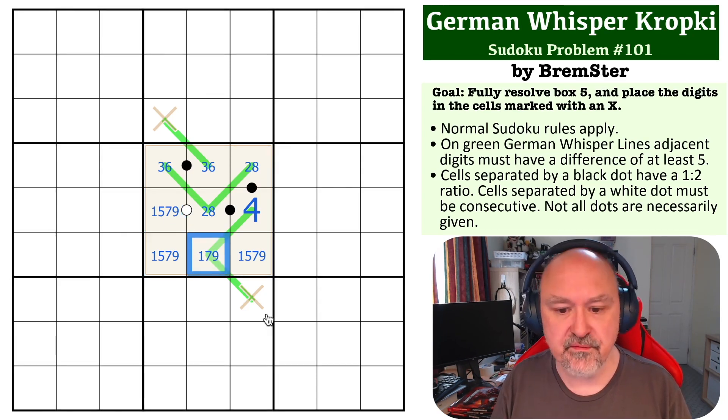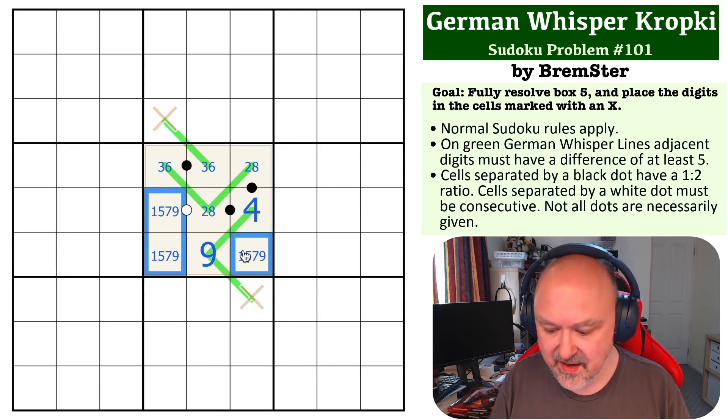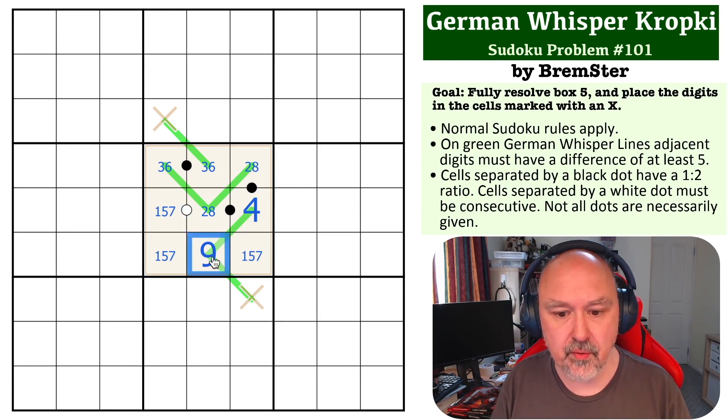Now we can never put 5 on a whisper line - in fact, this being a 4 tells us that this is the 9, and there's no 9 in these because 4 must be next to 9. Now this is a 2-8, we're not sure on the order, but if this is a 6, this would have to be a 1.